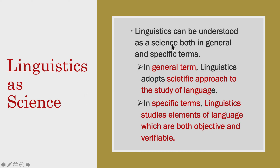Moving on: why is linguistics a science? Linguistics can be understood as science both in general and specific terms. In general terms, linguistics adopts a scientific approach to the study of language. In specific terms, linguistics studies elements of language which are both objective and verifiable.